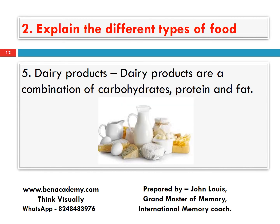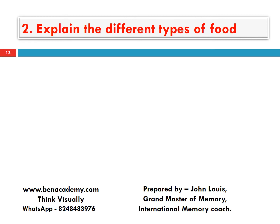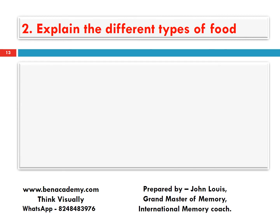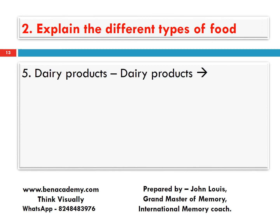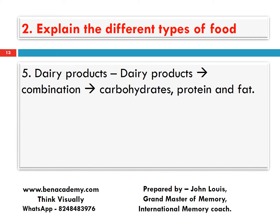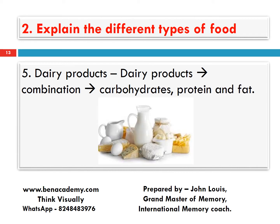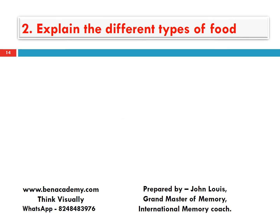There are various products available as dairy products. How to remember this paragraph: dairy products — it's a combination of carbohydrates, proteins, and fats. Very simple — it's a combination of carbohydrates, proteins, and fats, all three nutrients.